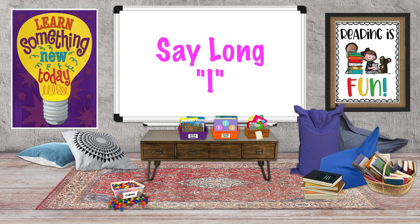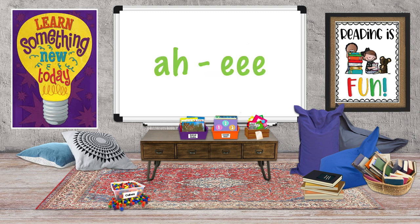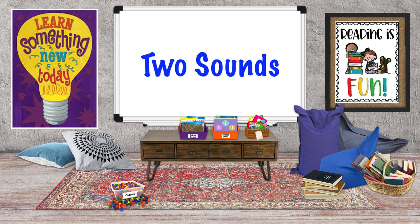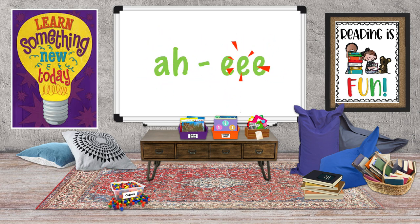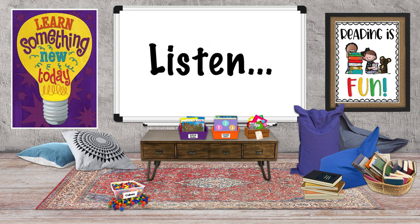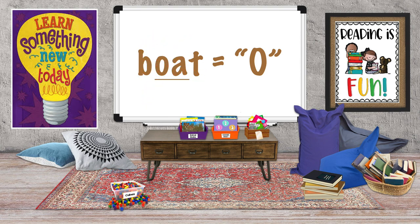Say long I: 'I.' Now say it slowly: 'I.' Did you notice? The sound of long I is actually two sounds — the 'ah' sound and long E: 'ah-ee, ah-ee, I.' Now long O — listen to the word 'boat.' Long O makes the sound of the name of the letter O. Boat.